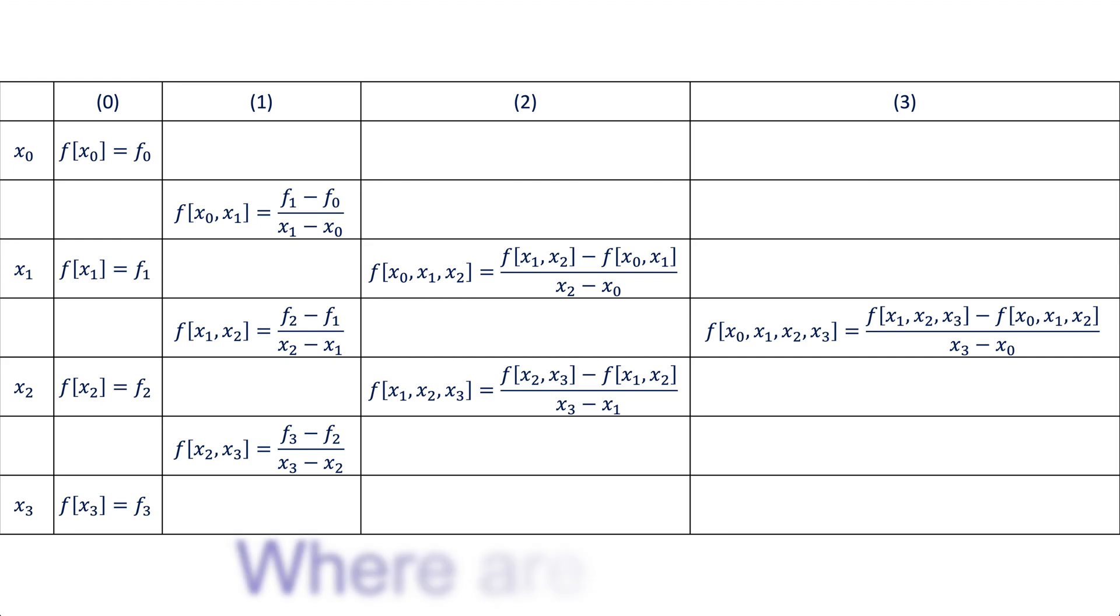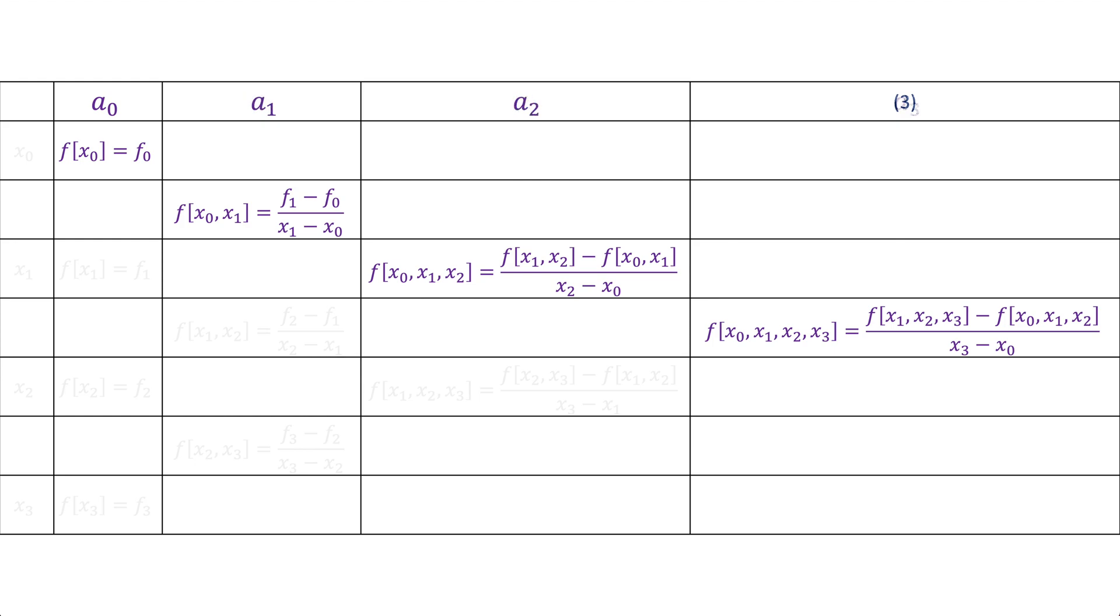Now, the question is, where are the a's or the coefficients, the constant coefficients in the polynomial? The answer is the coefficients of polynomial are the top elements of each column in order. So for this example, starting from column zero, we have a zero, a one, a two, and a three.